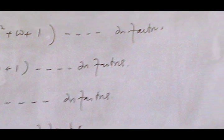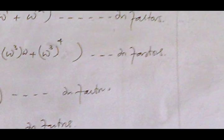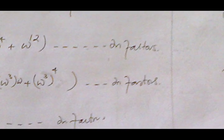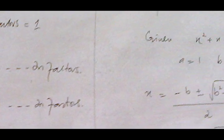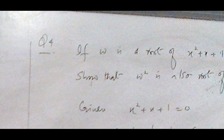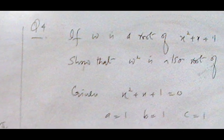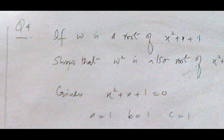At the end the product of all pairs equals 1. The phrase '2n factors' means we have the factors in pairs.